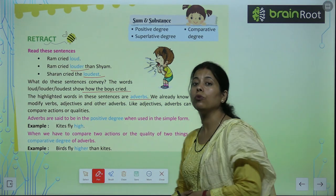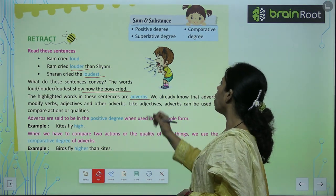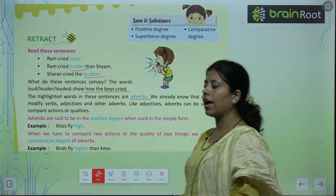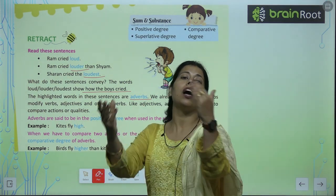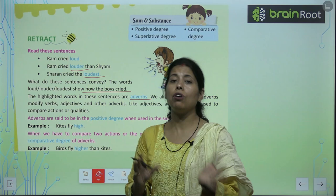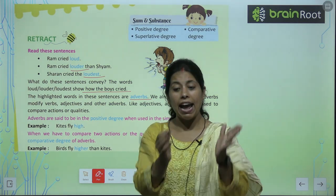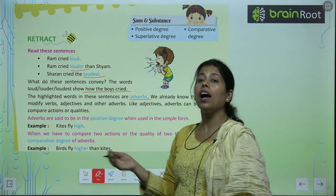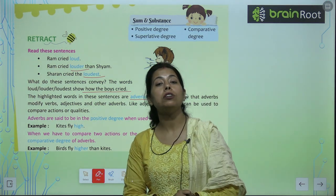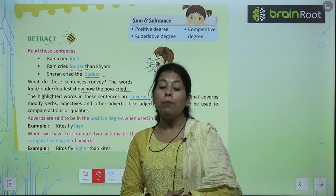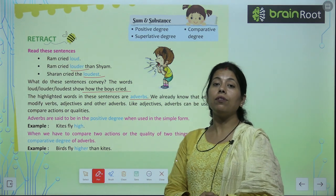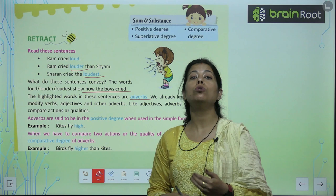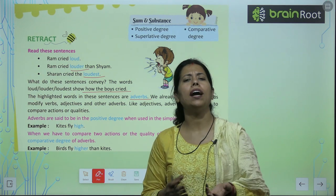जो highlighted words हैं, उन्हें हम Adverbs कहते हैं. But we already know that Adverbs modify verbs. हम पहले ही पढ़के आएं कि Verb को modify करने वाले word को Adverb कहते हैं, नाम से ही पता चल रहा है. Ram cried louder than Shyam. Sharon cried loudest. यह तीनों Adverbs हैं. Adverbs में अगर आप कुछ add कर दो, words के meaning में कुछ और add हो जाए — that is called an Adverb.